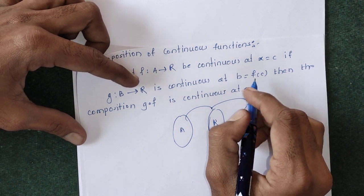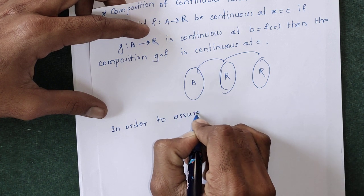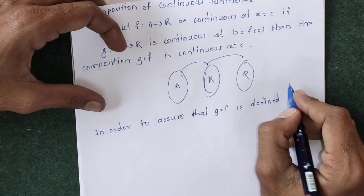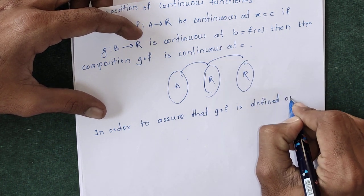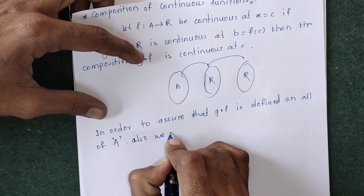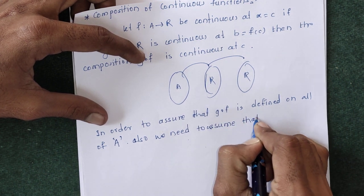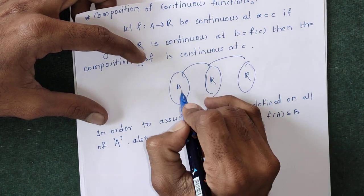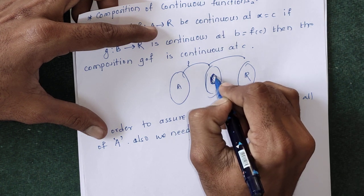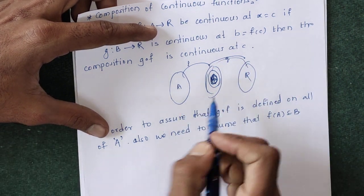In order to assure that g∘f is defined on all of A (the domain of f), we also need to assume that f(A) is a subset of B — that is, the image of A under f is a subset of B. Suppose f(A) is a subset of this whole set B, and g is from B to R; then their composition exists and is continuous.